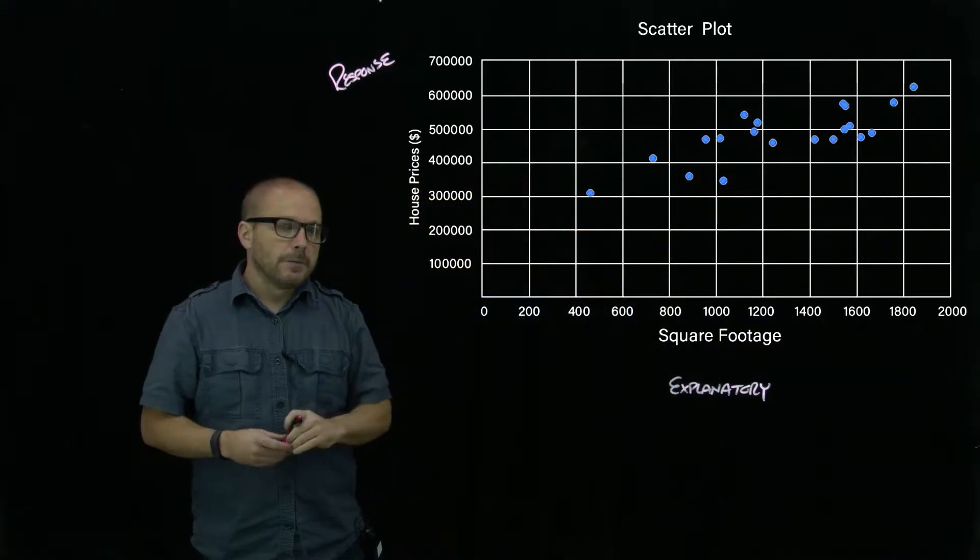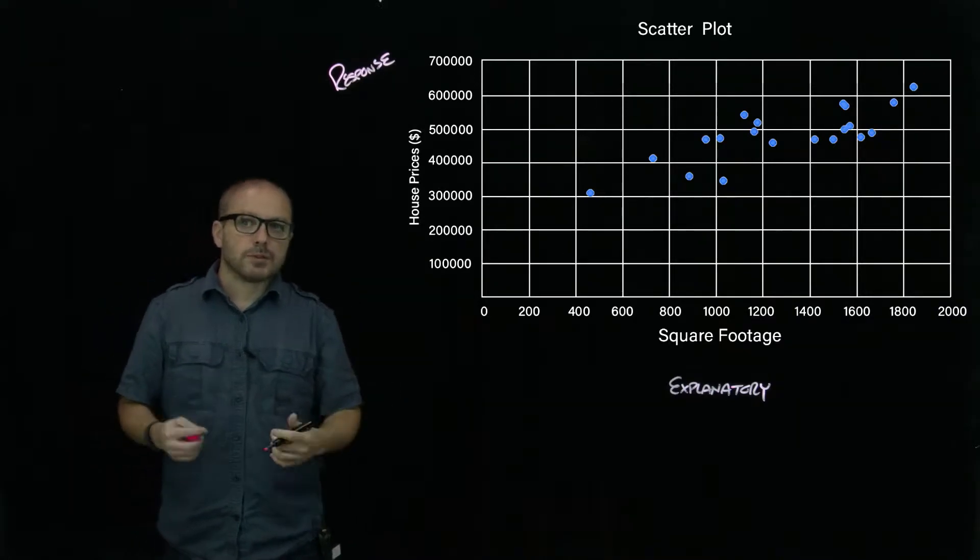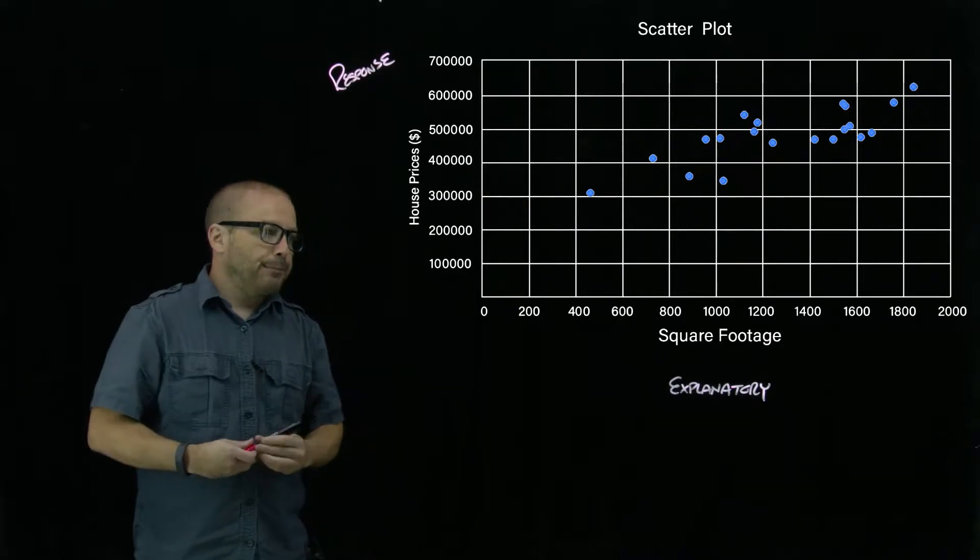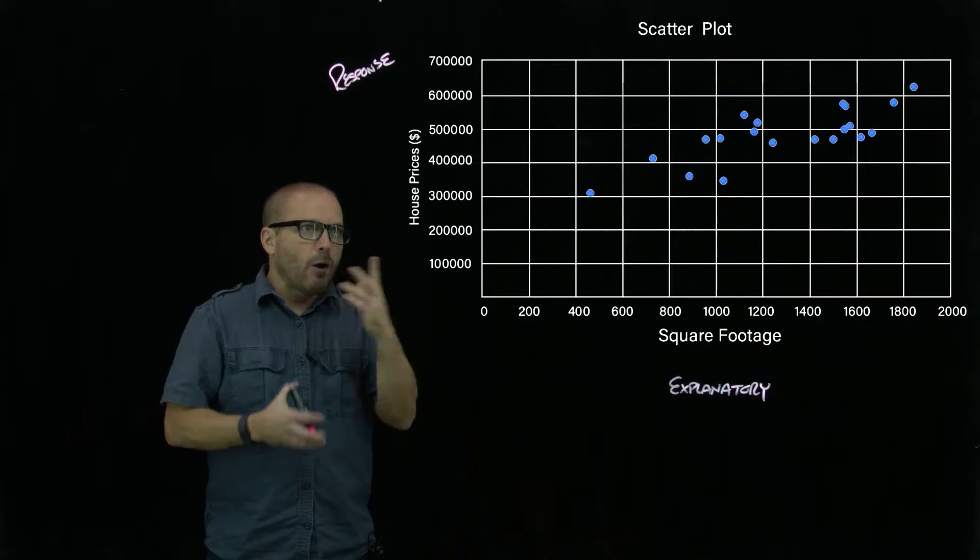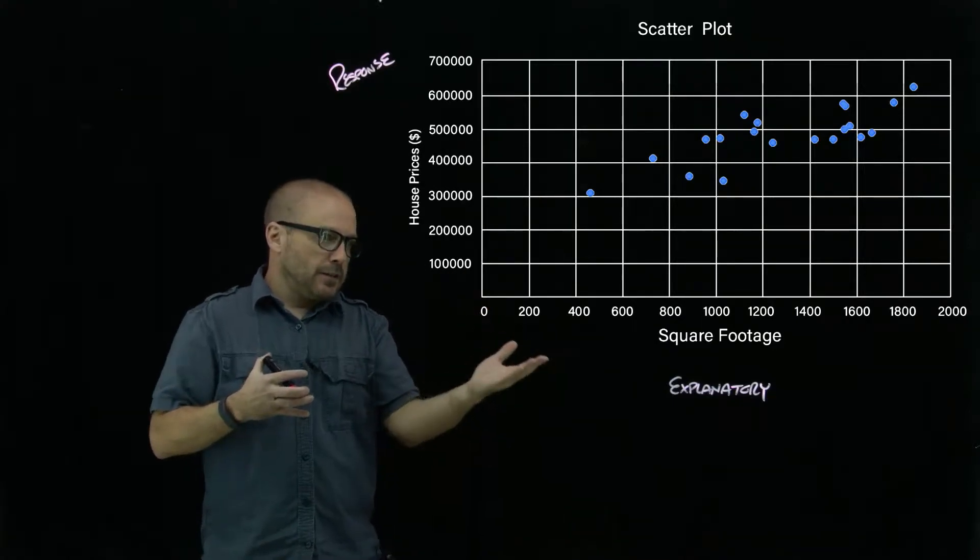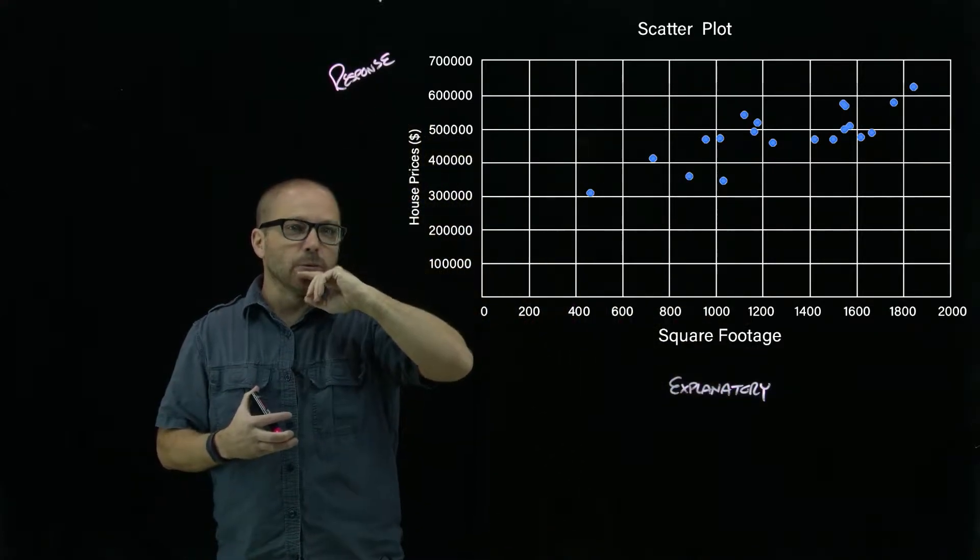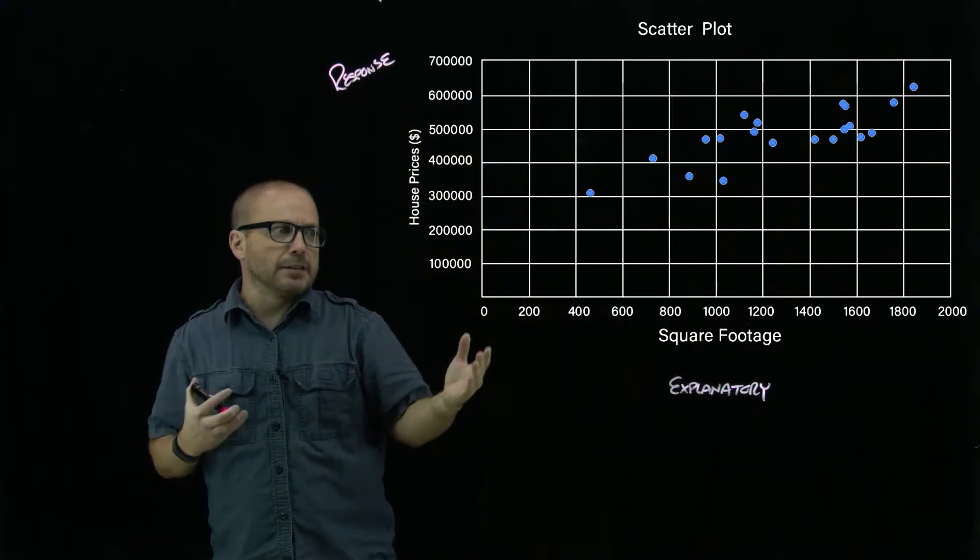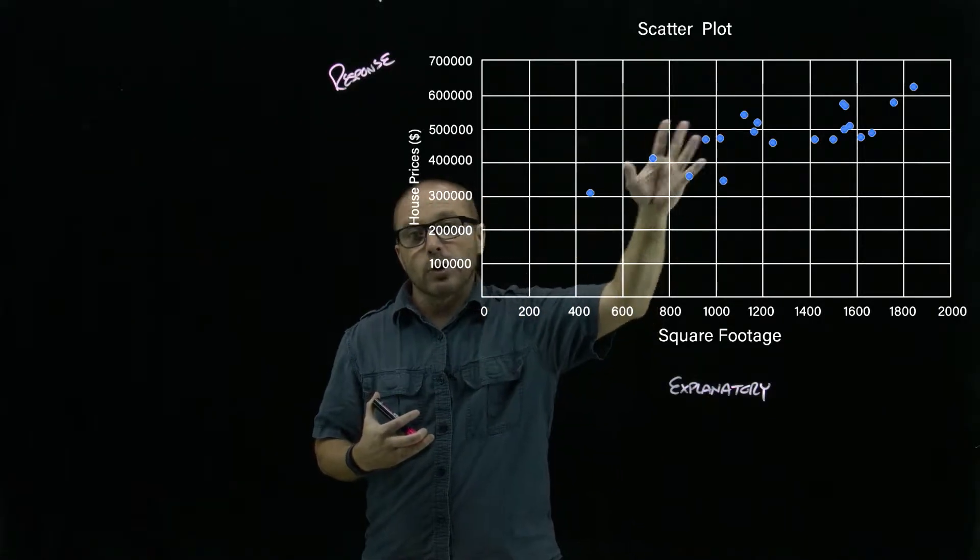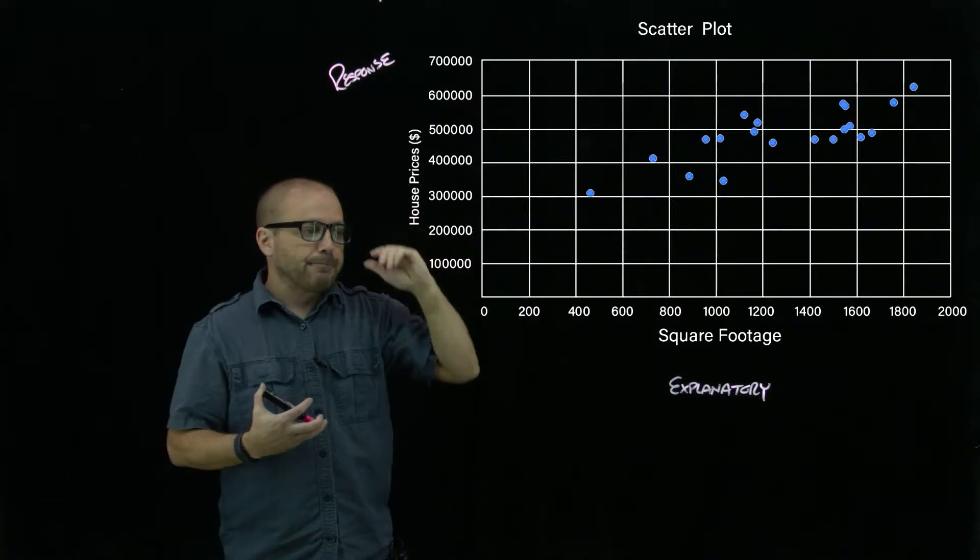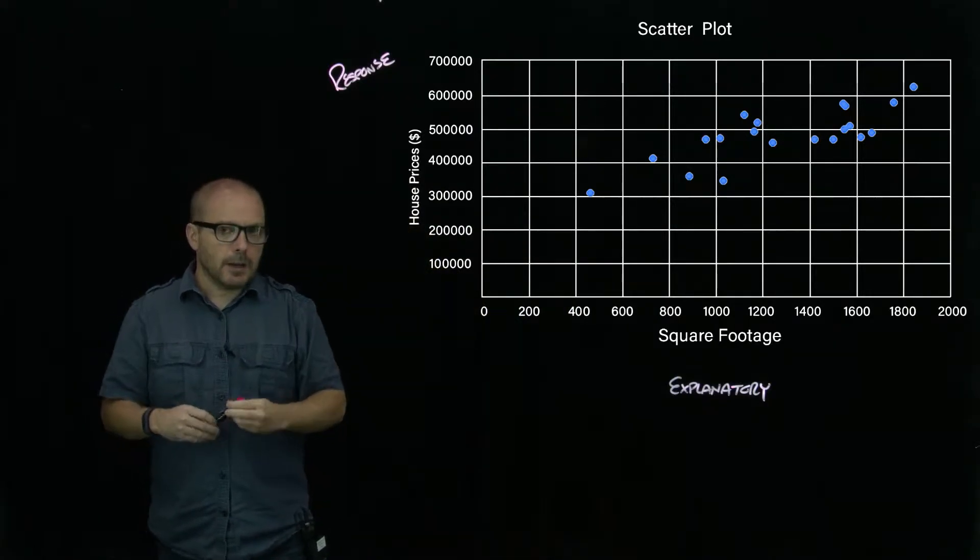It's not perfect by any means—those are not lining up perfectly—but there seems to be a trend there. You can visually see a trend, and that's the thing we're going to try and put some numbers to in our analysis of the data. How well does this variable predict this one? One way of thinking about how well it does is: the better it does, the better this data is going to match some sort of curve.